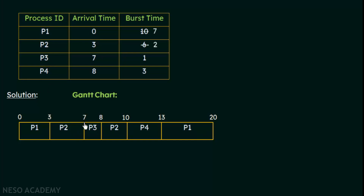P3 executes for 1 ms and completes. At the 8th millisecond, P4 arrives with a burst time of 3 ms. The remaining processes are P4 (3 ms), P2 (remaining 2 ms), and P1 (remaining 7 ms). Among these, P2 has the smallest remaining burst time of 2 ms, so P2 gets the CPU next.